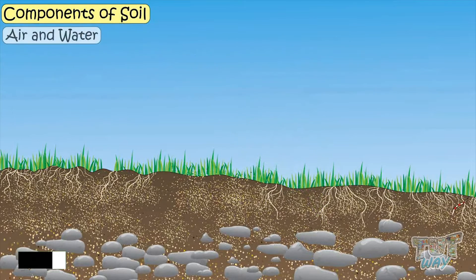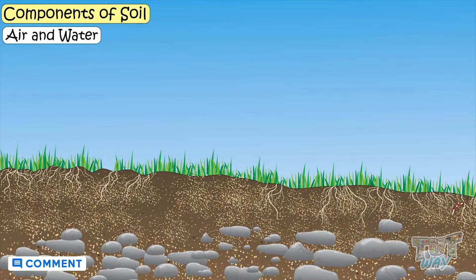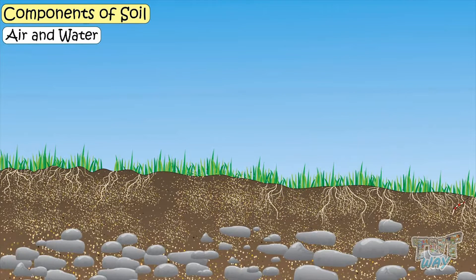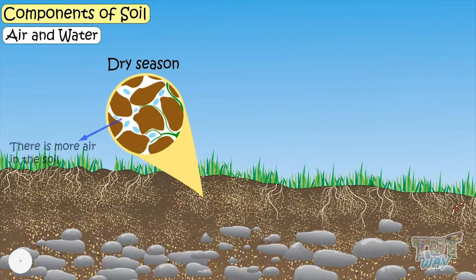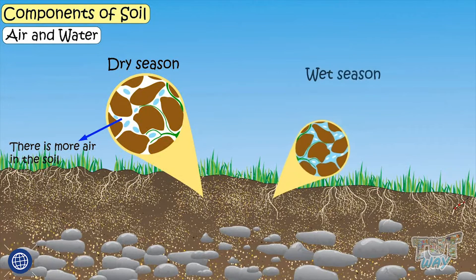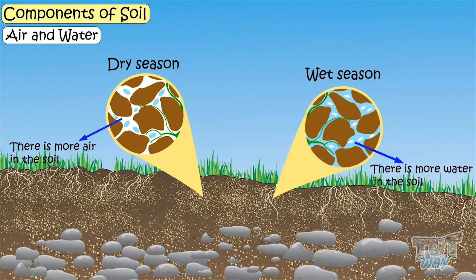Air and water are present inside the soil pores. During dry season, air is more in the soil, and during wet season, water is more inside the soil.